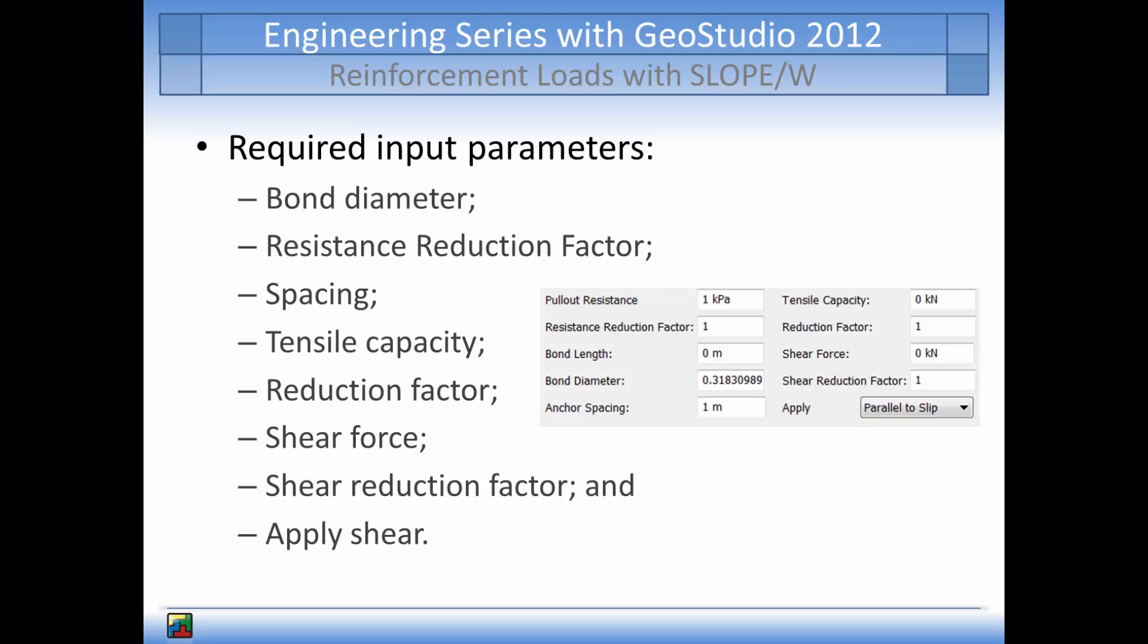For this example, we will assume the pull-out resistance is 300 kilopascals with a resistance reduction factor of 1.5, bond diameter of 1 over pi or approximately 0.318 meters, bond length is 3 meters, and spacing in the out-of-plane dimension is 2 meters. The tensile capacity is set to 2,000 kilonewtons with a reduction factor of 2.